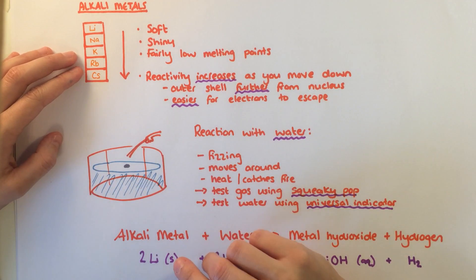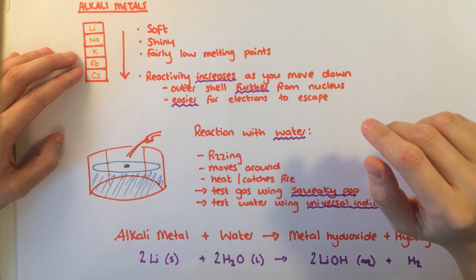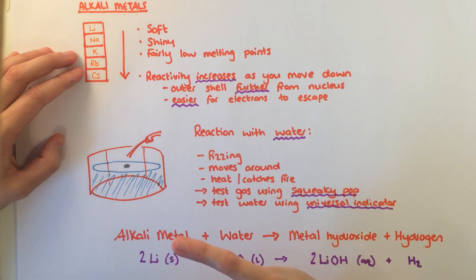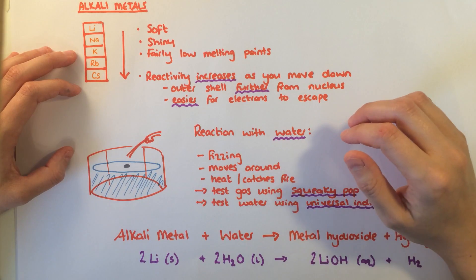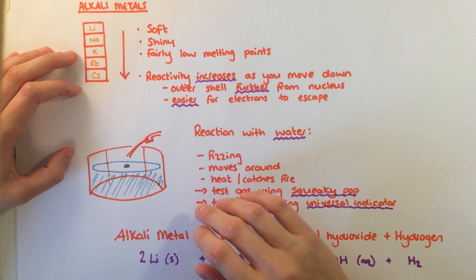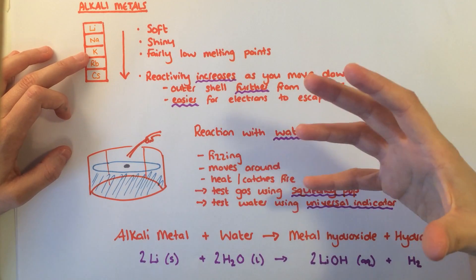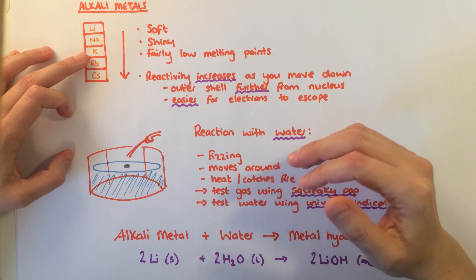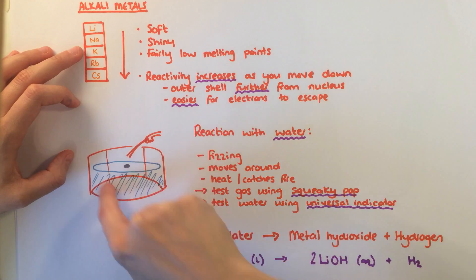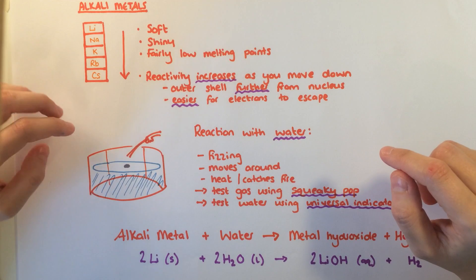Hopefully you've seen the reactions of alkali metals with water. When a small amount of metal is dropped into water, you'll see fizzing and the piece of metal moving around on the surface and then disappearing. As you move down the group, you'll see more vigorous reactions, with potassium melting, producing heat and catching fire. If you collect the gas produced and do a squeaky pop test, you'll find it is hydrogen gas. If you put universal indicator into the water, you'll find that the products made are alkaline.